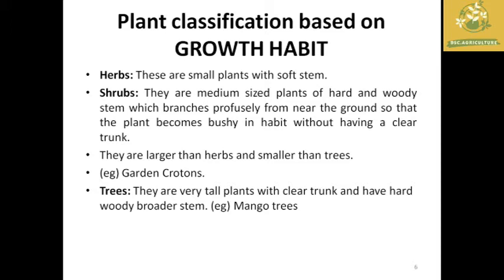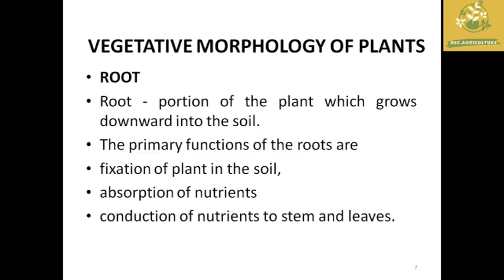Now we classify plants based on their growth habit. The first is herbs — small plants with soft stems. Shrubs are somewhat bigger than herbs, with hard woody stems branched near the ground, giving a bushy appearance without a clear trunk. Shrubs are larger than herbs but smaller than trees; example: crotons grown in gardens. Trees are very tall with a clear trunk and hard woody stems; example: mango tree.